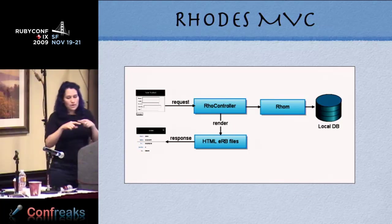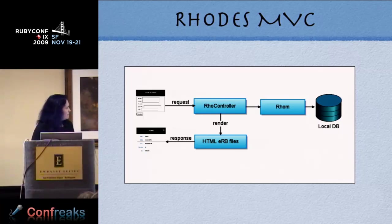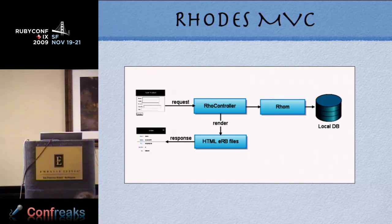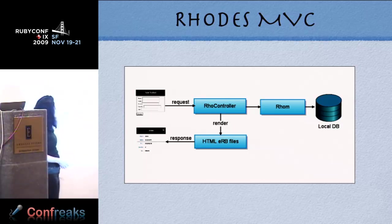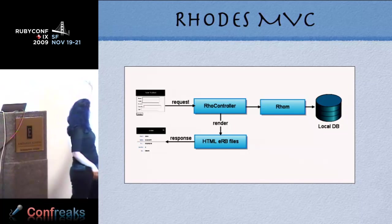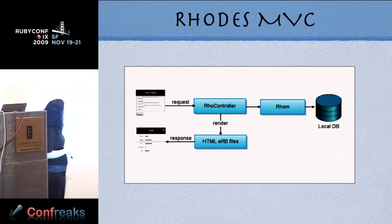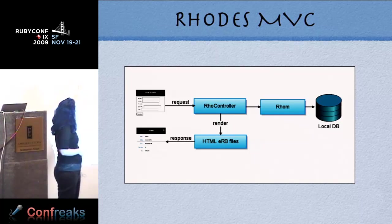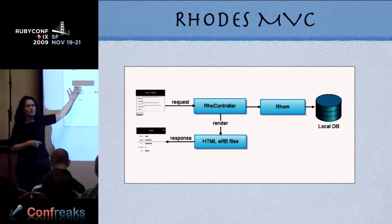Rhodes has, within the phone within this native application, the same kind of MVC model we see in Rails. You have a screen and the user clicks a button — that generates what looks to your program like a web request, but it's all internal to your native app. It goes to a controller, which might access the local database on the phone, and could also access the remote sync server. When it gets data back, it renders a view, which is HTML ERB files, and that creates another screen of your app.